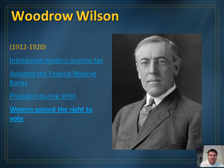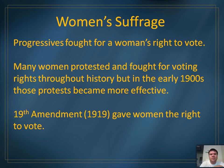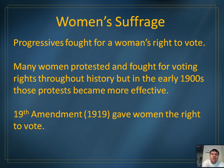Wilson introduced the modern income tax, adopted the Federal Reserve of Banks — which still exists today — and was president during World War I. Under his presidency, women gained the right to vote. Progressives had fought for women's voting rights almost all the way back to before the Civil War, but protests in 1917 and 1918 became especially effective. During World War I, many women worked as nurses and helped out the country at home, and because of that, many people began to believe women should be allowed to vote, paving the way for the 19th Amendment in 1919.